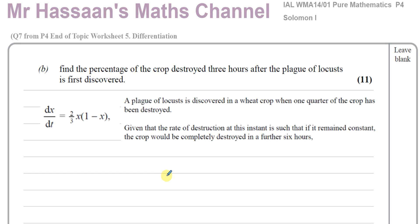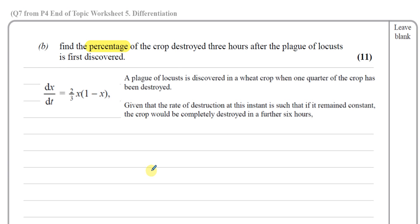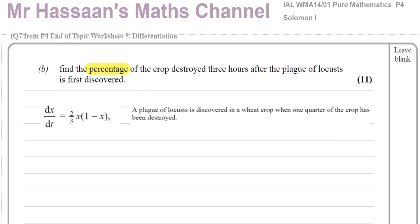Part B says: find the percentage of the crop destroyed three hours after the plague of locusts is first discovered. Note the keyword — it says percentage, not proportion. So x is a proportion, and we have to change our answer into a percentage at the end. We need to find x when T equals 3 — three hours after the plague is first discovered. T equals 0 is when one quarter of the crop has been destroyed.